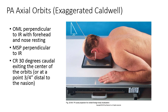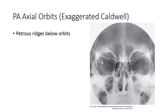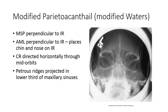The PA axial view, or exaggerated Caldwell, places the patient in the same position as other Caldwell views discussed. The OML should still be perpendicular to the IR by placing the forehead and nose against it. The MSP should also be perpendicular to the IR. For the central ray to be exaggerated for this view, angle 30 degrees caudal exiting mid-orbits, or three-quarters of an inch distal to the nasion. The increased angulation compared to other Caldwell views places the petrous ridges below the orbits and prevents superimposition of the ridges over the pertinent anatomy.